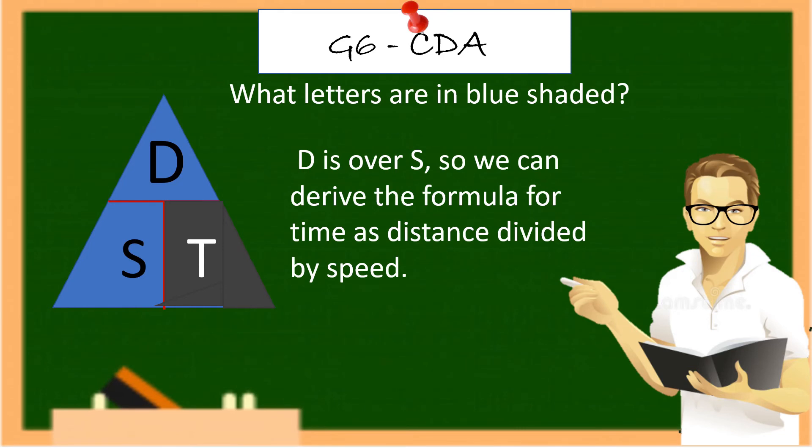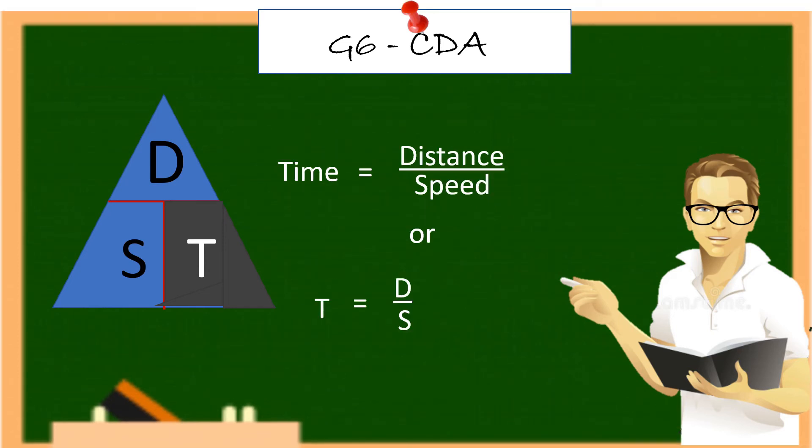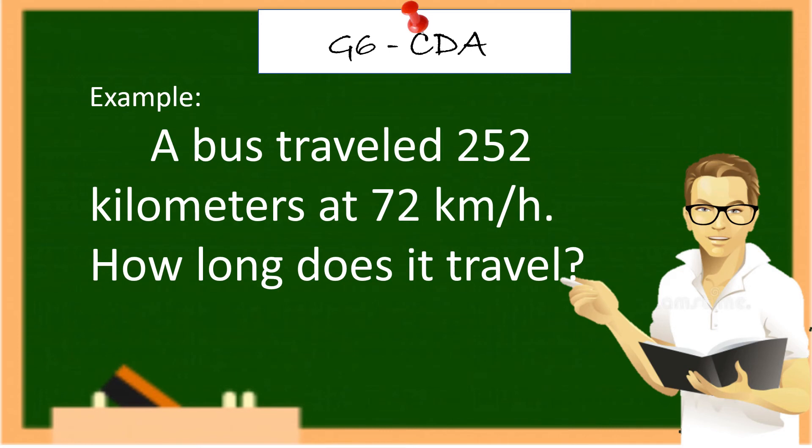What letters are in blue shaded? D is over S. So we can derive the formula for time as distance divided by speed. Time equals distance over speed or T equals D over S. Example: A bus traveled 252 kilometers at 72 kilometers per hour. How long does it travel?